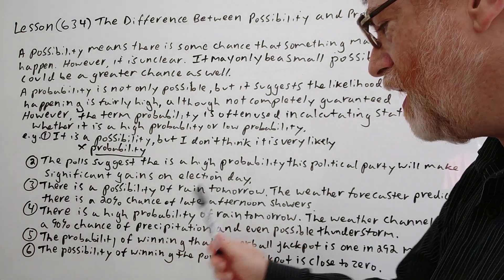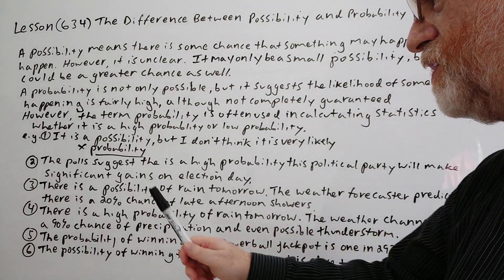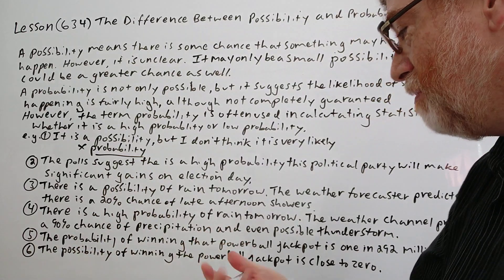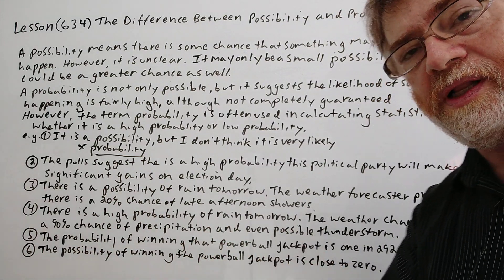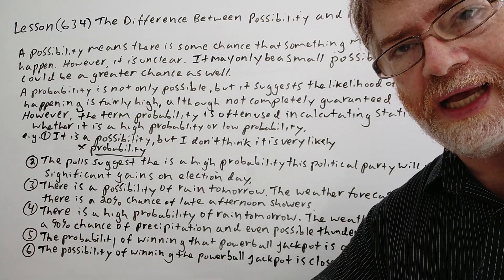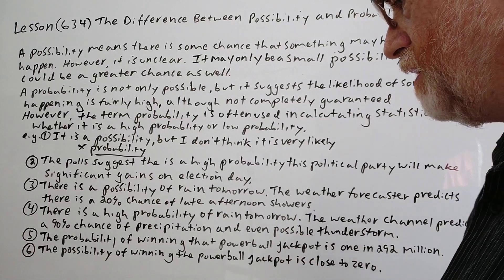There is a high probability of rain tomorrow. The weather channel predicts a 90 percent chance of precipitation, something coming down from the sky, probably rain and even possible thunderstorms. So if they're adding that in, it makes it all much more likely. They're more likely to use the word probability.